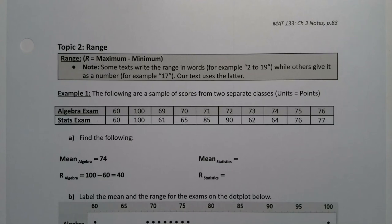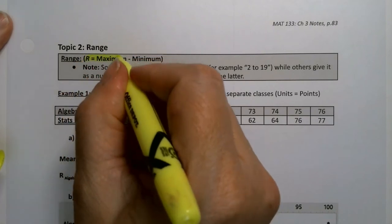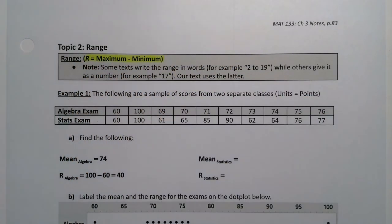We want to learn about our first measure of dispersion, which is range. Now range is really simple because it's just the maximum minus the minimum. It has a symbol which is R.